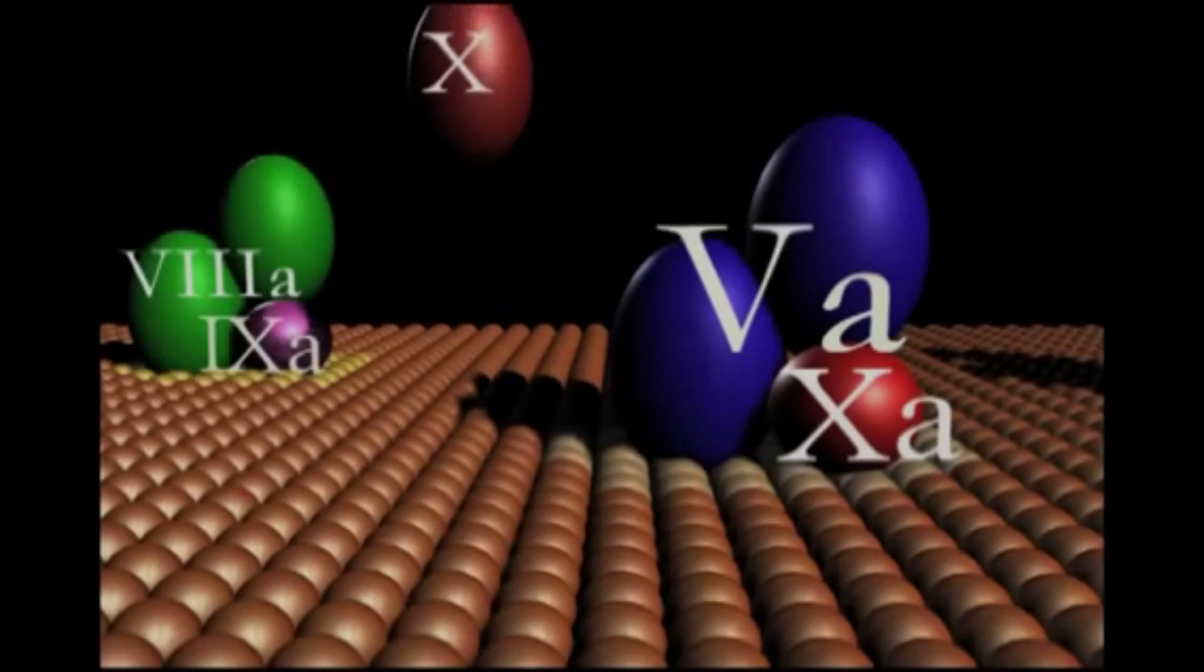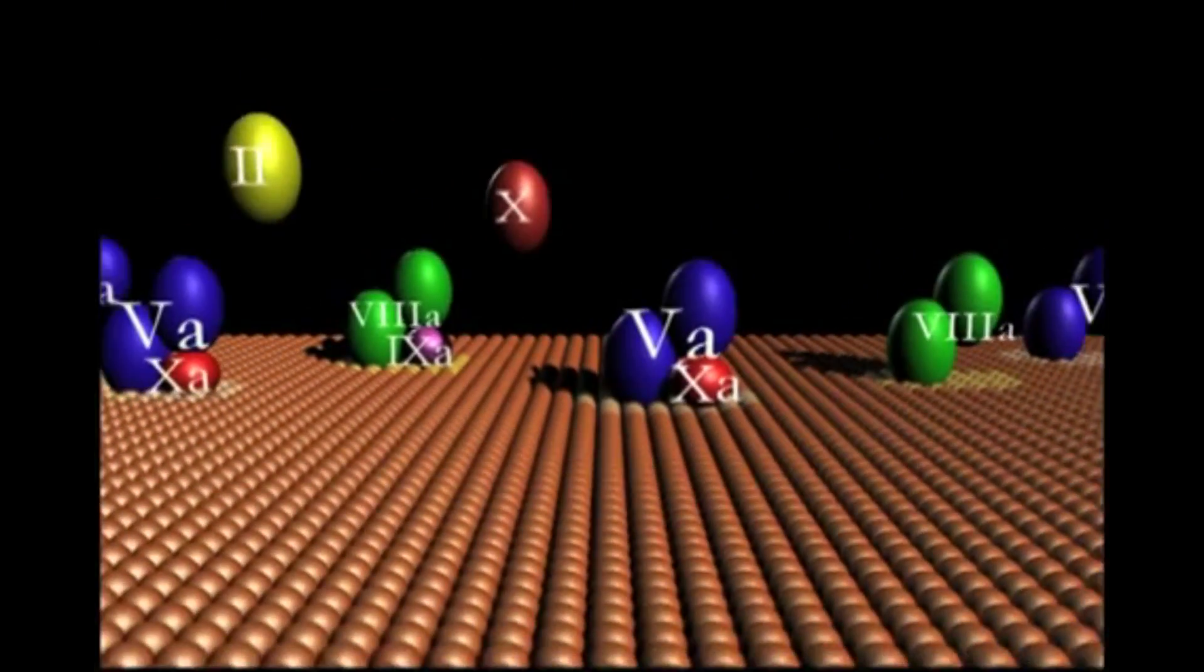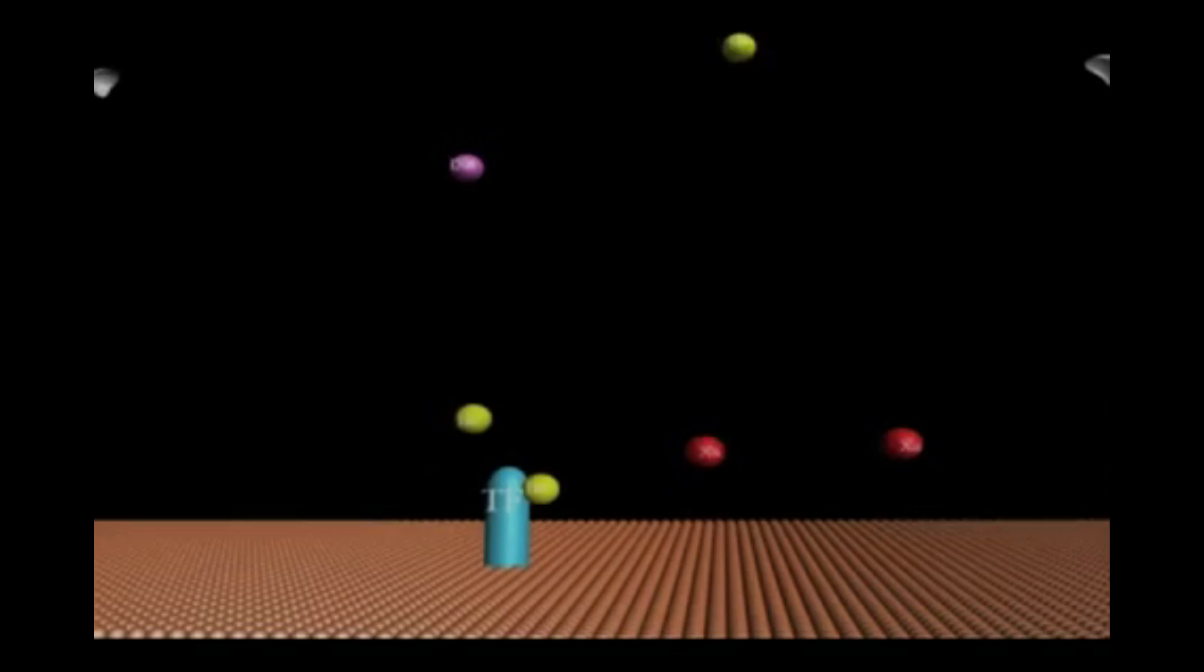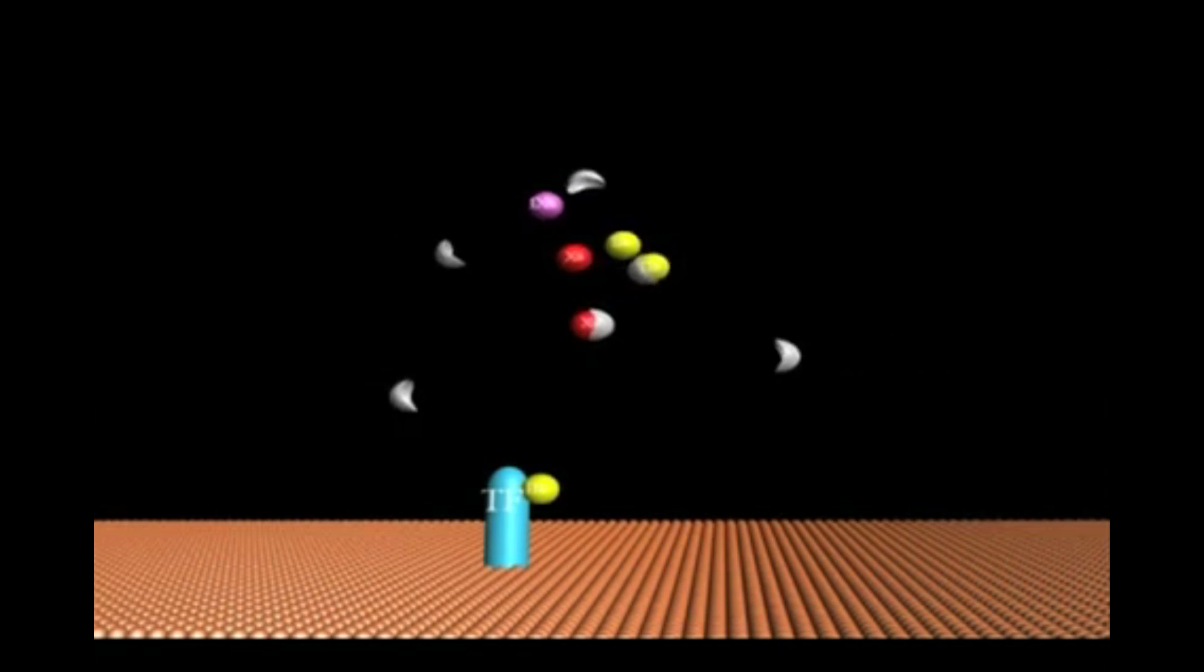Prothrombinase (5a, 10a) and the intrinsic factor 10a complex (8a, 9a) are protected from inhibition by antithrombin and other plasma inhibitors when in the complexed form.